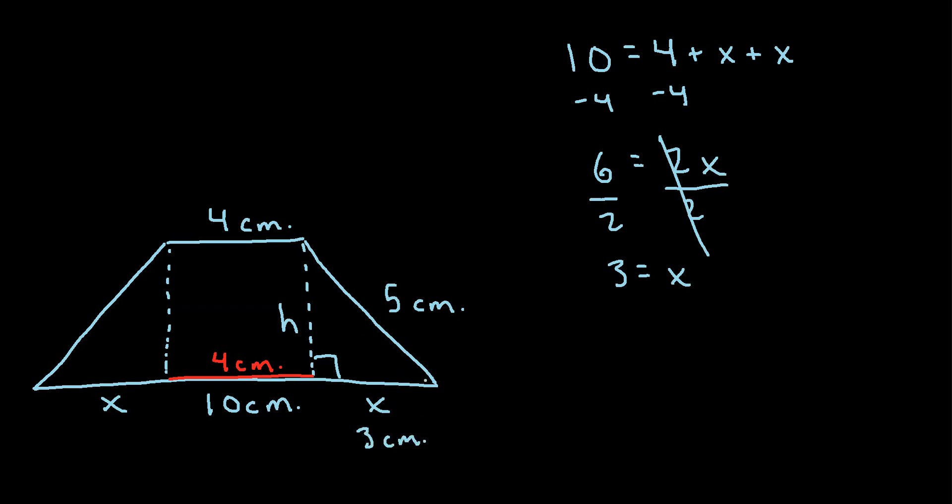So now we know two of the sides of the triangle, so we can figure out what h is. So according to the Pythagorean theorem, that would say h squared plus this side squared, so 3 squared, must be equal to the hypotenuse squared, so 5 squared. So we can solve for h, so we get h squared plus 3 squared is 9, is equal to 5 squared, which is 25.